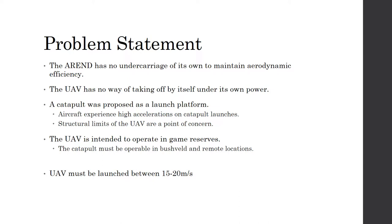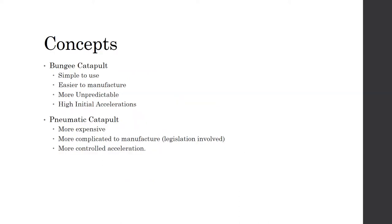The catapult must be operable in bushveld terrain and remote locations. According to the specifications of the UAV, it must be launched between 15 and 20 meters per second. I considered two types of catapult as potential concepts: the first was the bungee catapult and the second was the pneumatic catapult.